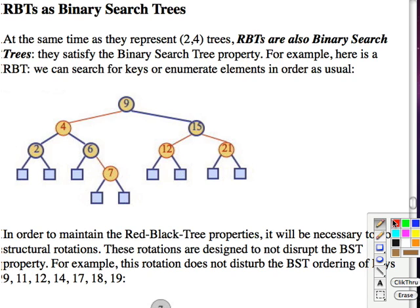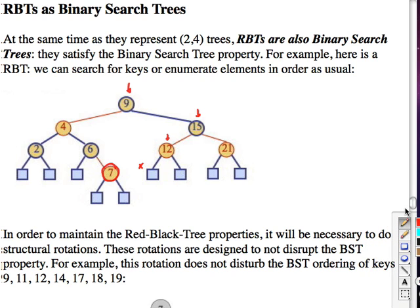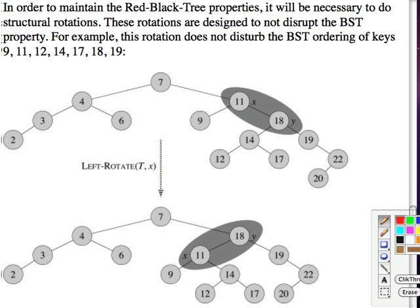Red-black trees are also binary search trees and satisfy the binary search tree property. For example, searching for key 10: we check the root — it's bigger — then this node — it's smaller — then this node — it's smaller — and it's not there. Searching for 7: it's smaller than 9, bigger than 4, bigger than 6, and here it is. When we do various operations, we must ensure that when we fix the tree structure to correspond to 2-4 tree operations, we also preserve the binary search tree property.